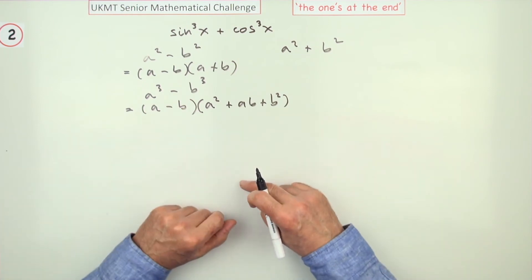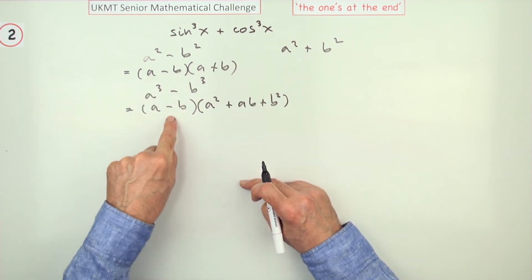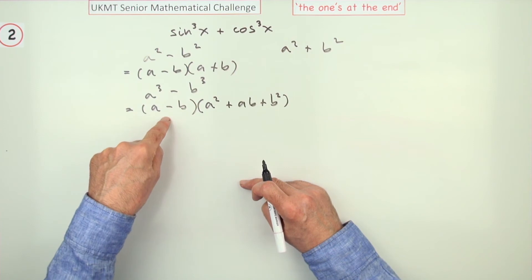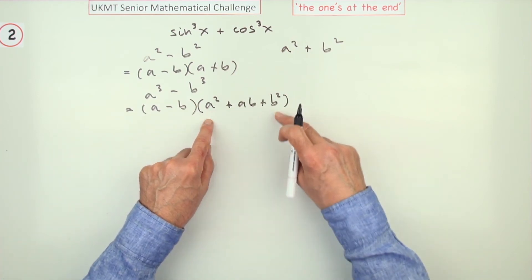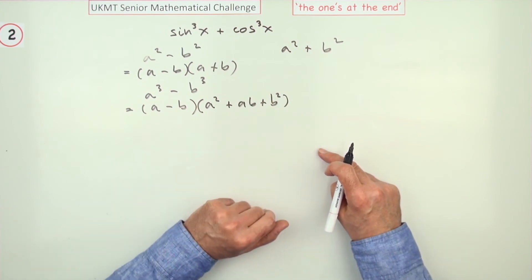When this gets multiplied out, all you're left with is the first times the first and the last times the last because the others cancel out. So that's a handy one to remember: the difference of two cubes. It's the same as the difference of two squares just with this extended to a quadratic running through the terms giving power to each time.